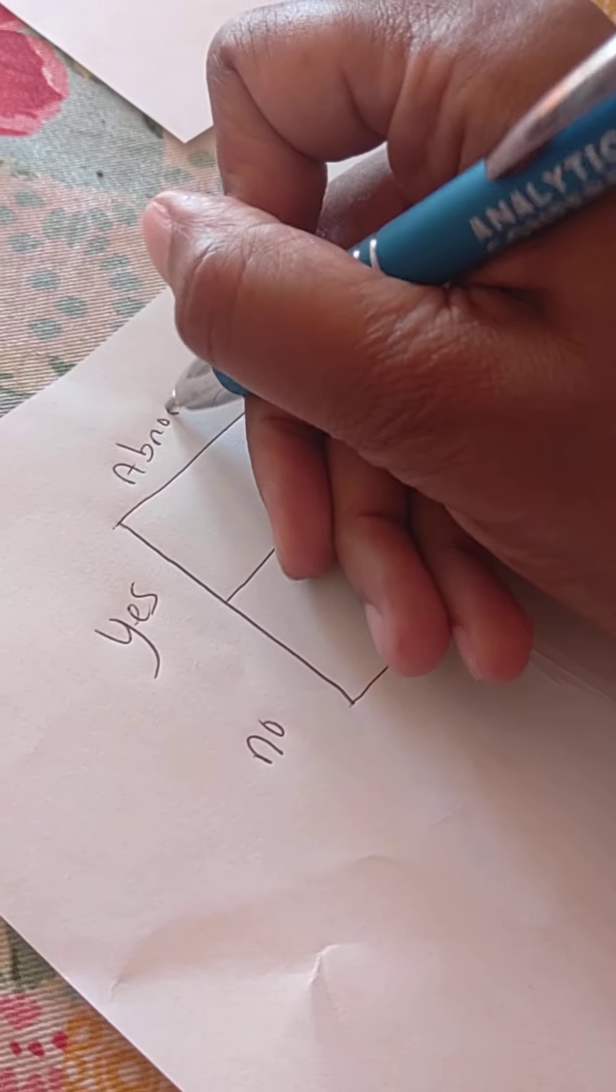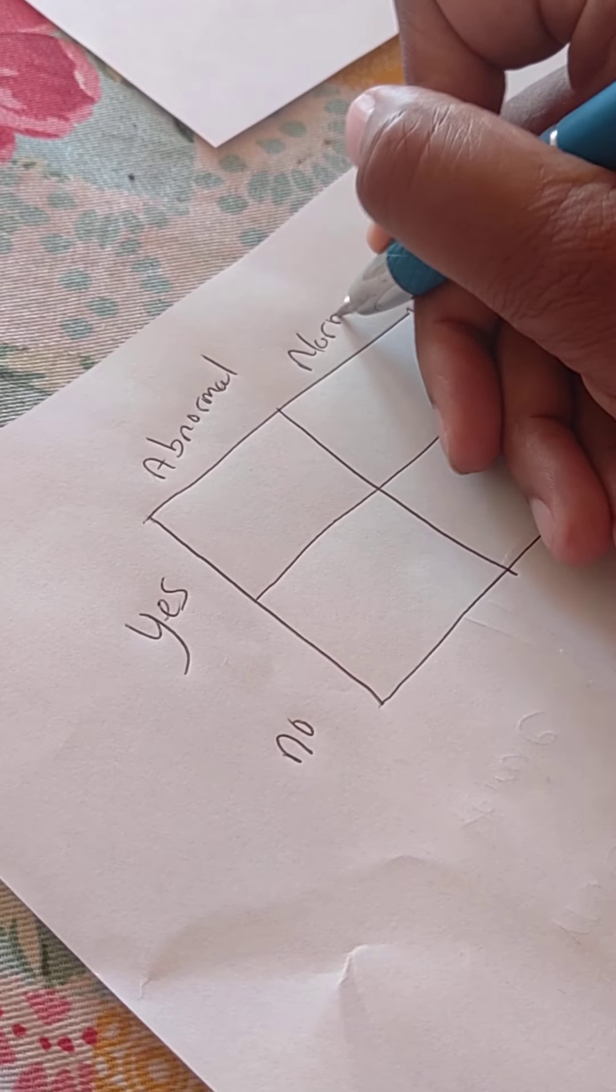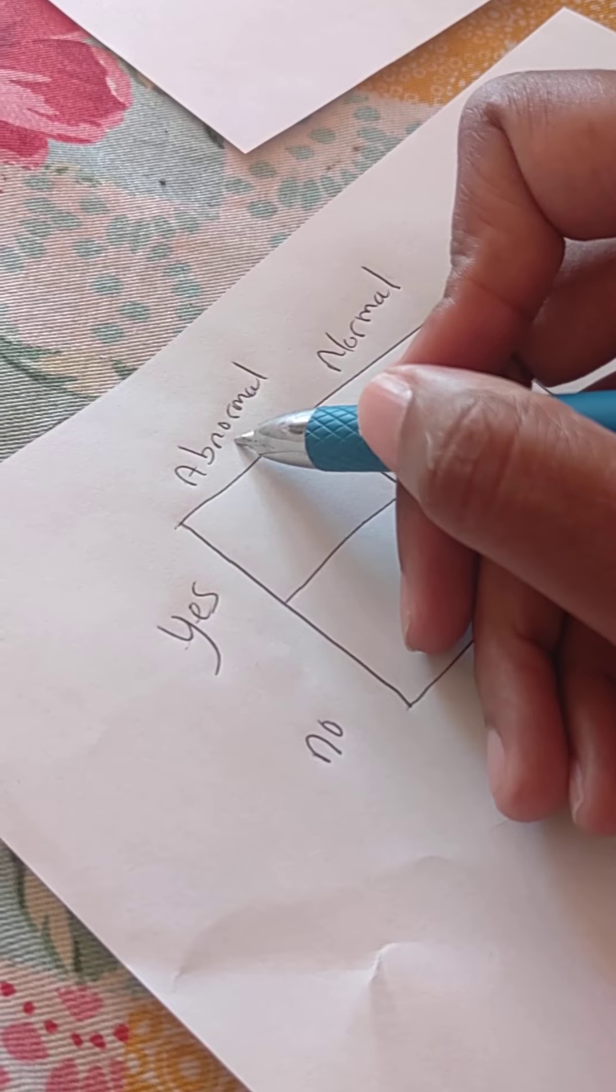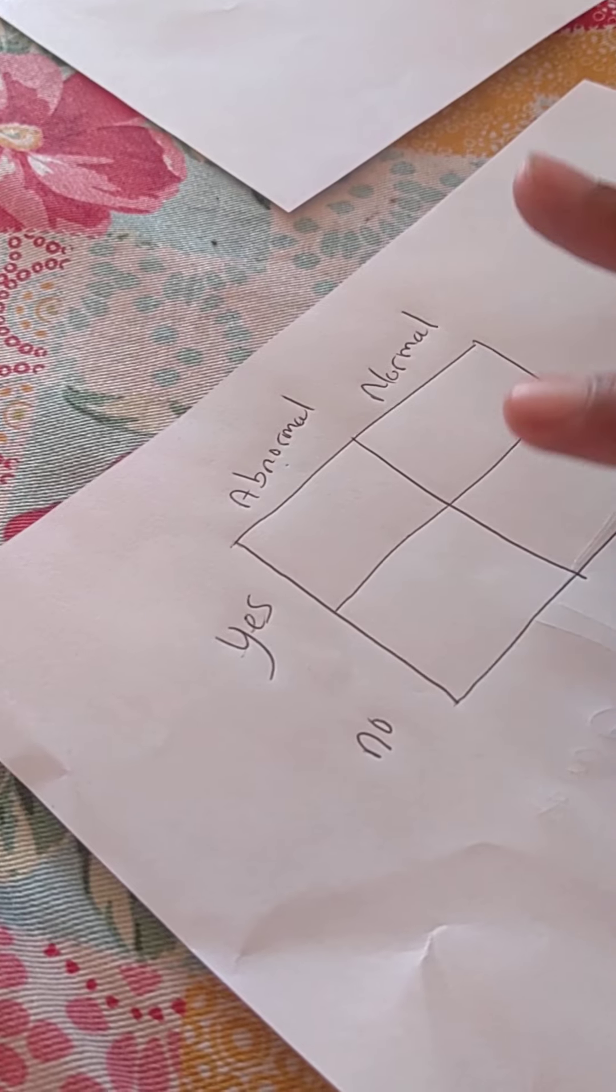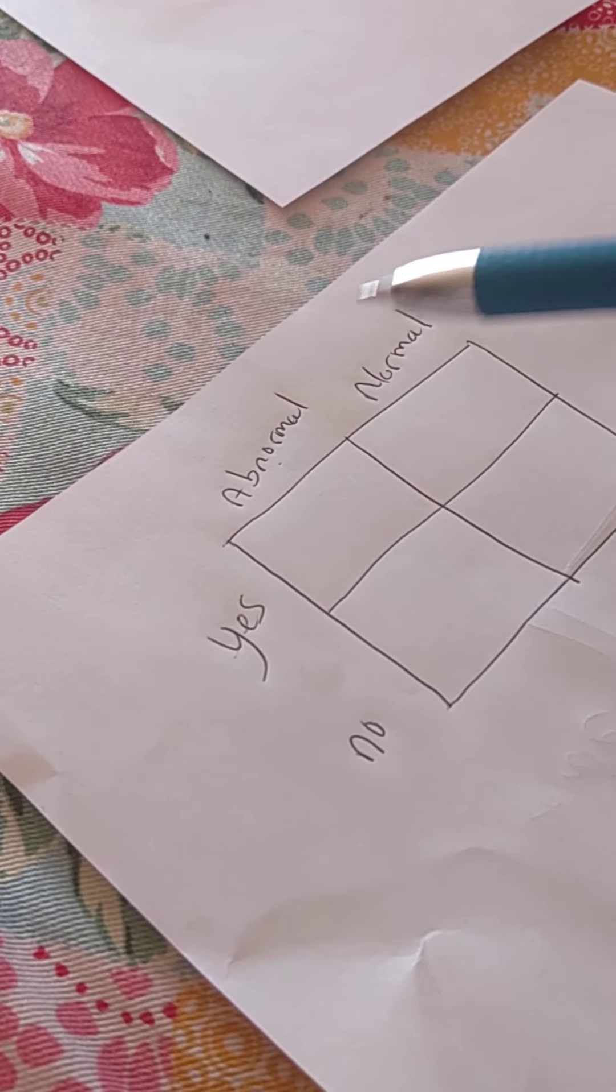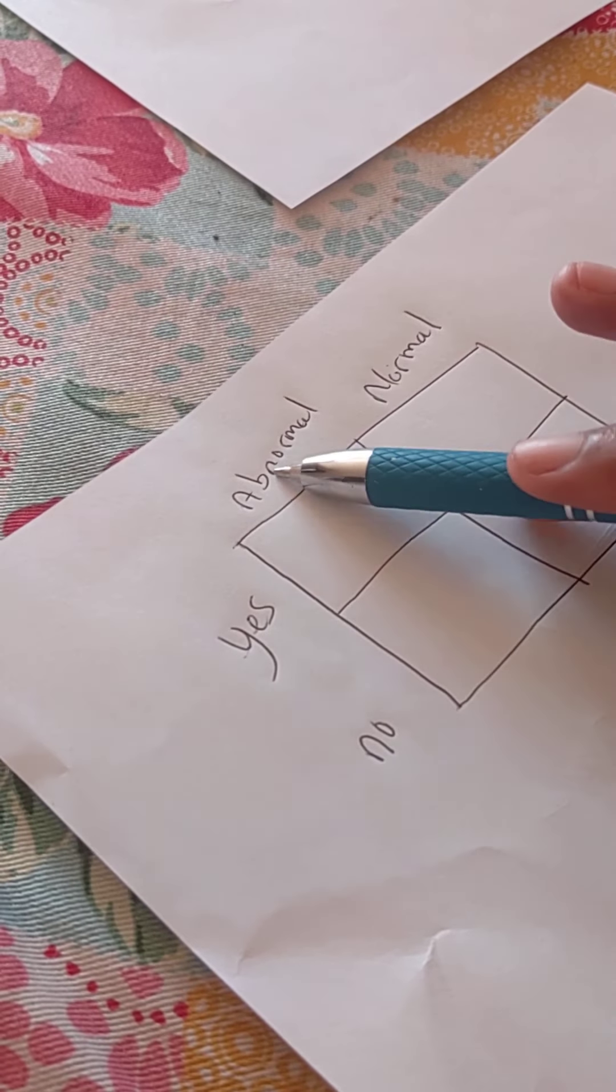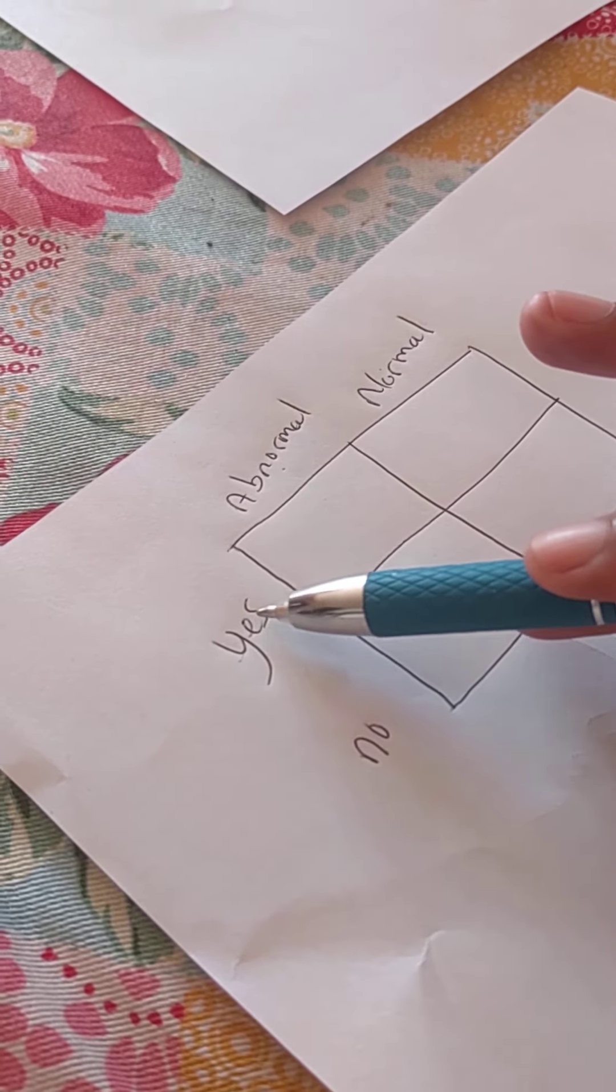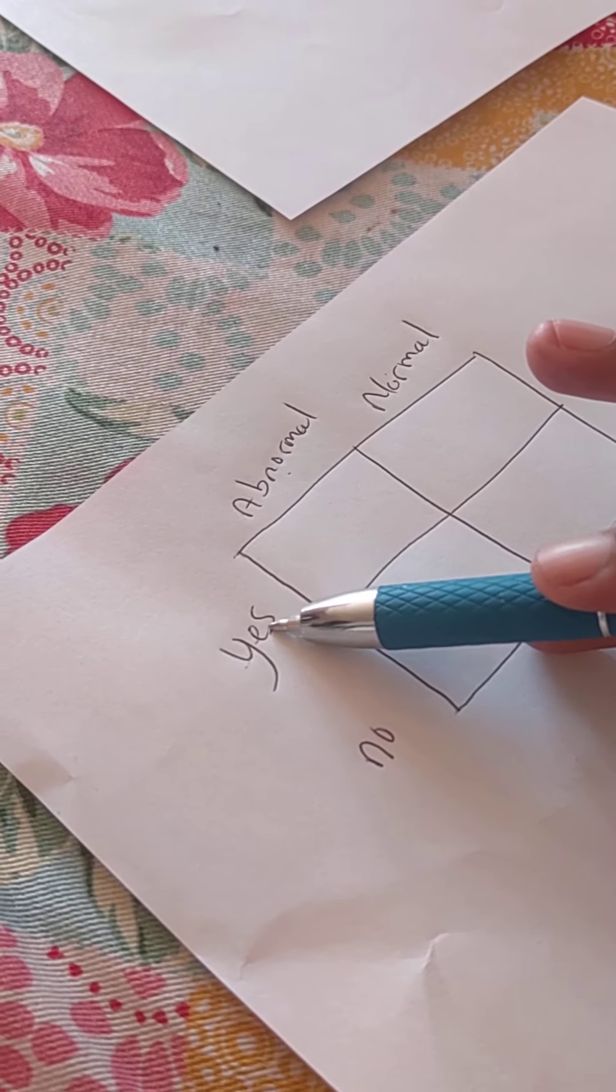All right. So, yes and abnormal. Let's suppose that we have this table and we're looking at the relationship between a lab test that has two categories, normal and abnormal, and some other factor, maybe smoking.